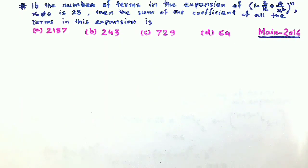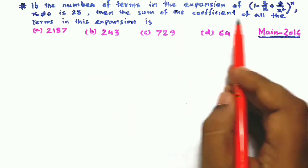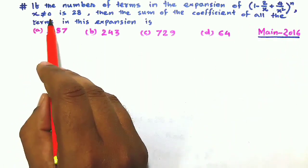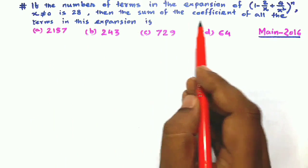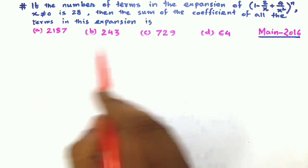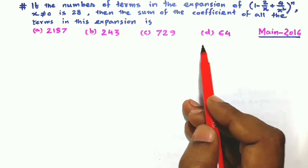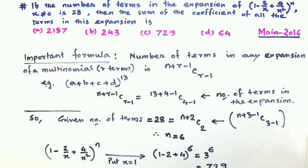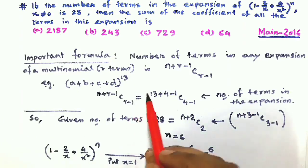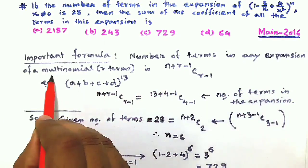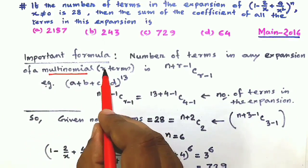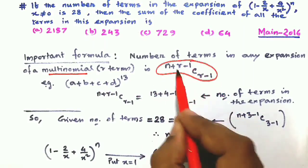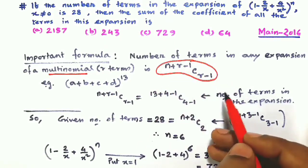This is a most important question from the Joint Entrance Exam. If the number of terms in the expansion of (1 - 2/x + 4/x²)ⁿ, where x ≠ 0, is 28, then what is the sum of coefficients of all the terms in this expansion? First, let me give you a very important formula: the number of terms in any multinomial expansion with r terms is n+r-1 C r-1. Please remember this formula.